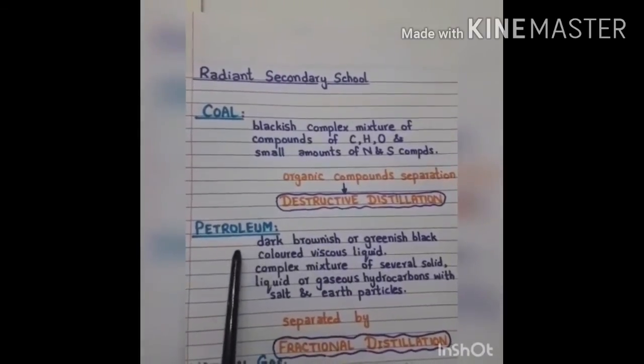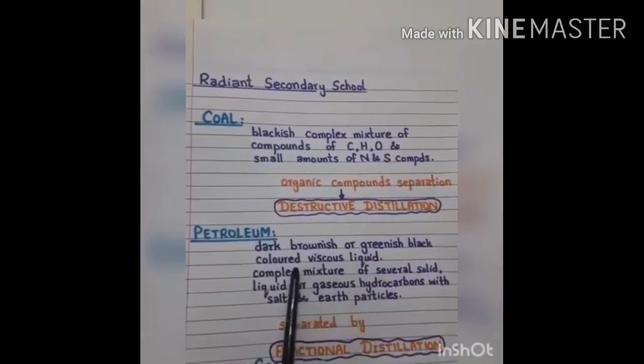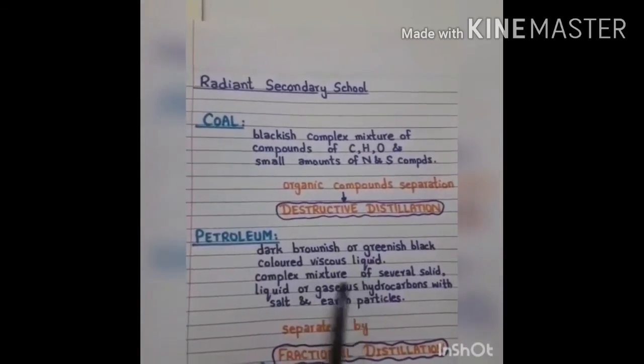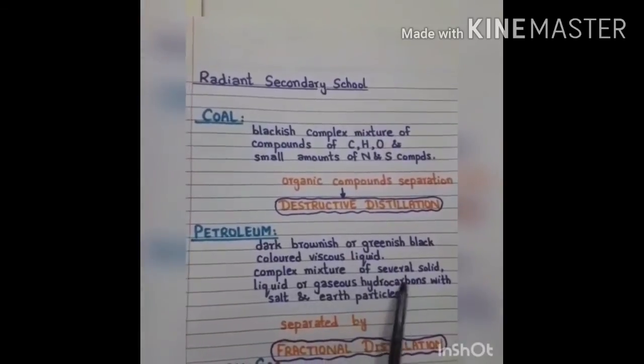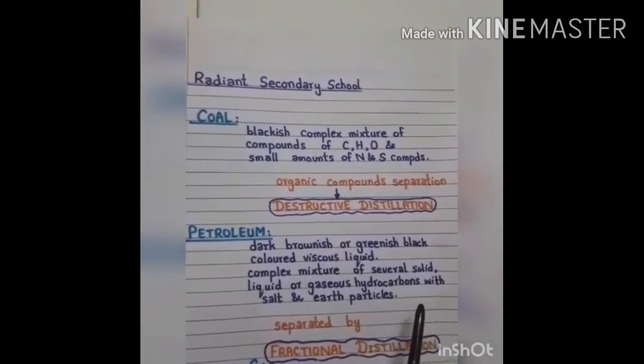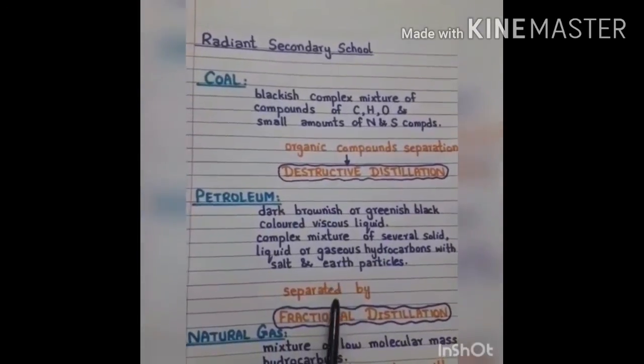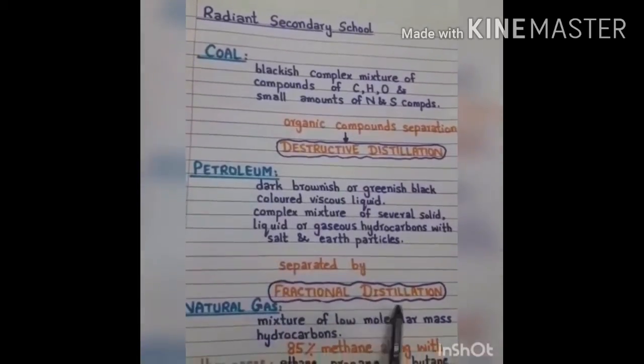Now is petroleum. Petroleum is a dark brownish or greenish black colored viscous liquid. It is a complex mixture of several solids, liquids, or gaseous hydrocarbons with salt and other earth particles. This mixture is separated by fractional distillation of petroleum.